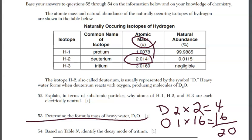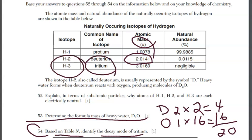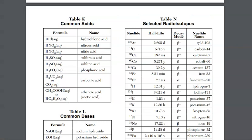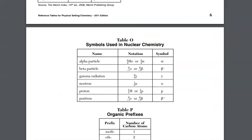For question 54, based on table N, identify the decay mode of tritium, which is isotope H-3 — hydrogen with a mass number of 3. Let's go to reference table N. We're looking for tritium or H-3. The decay mode is in the third column, and that is beta minus. Don't forget the negative sign. You could write the beta symbol with a minus, or just indicate that it is beta decay.